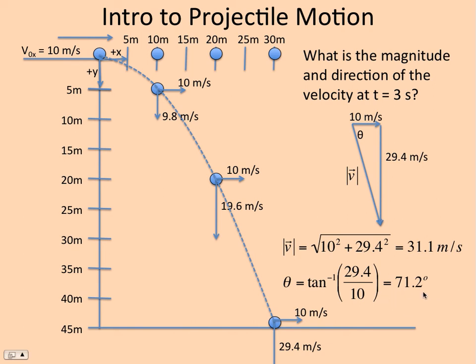If the problem asks you to measure it counterclockwise from the plus-x axis, then it would be a negative 71.2 or 288.8 degrees. So if you are trying to check your answer, normally we would say this is a negative 71.2 degrees.